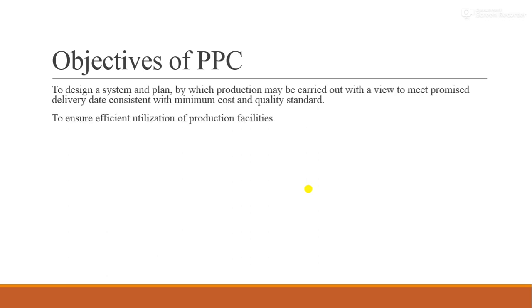To ensure the efficient utilization of production facilities — the company has raw materials and machines — proper utilization of these is an objective of PPC. Another objective is to coordinate the production activities of different departments, which PPC coordinates.